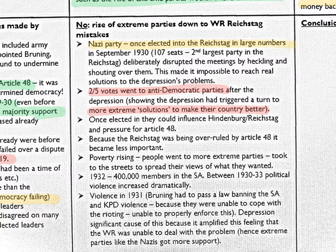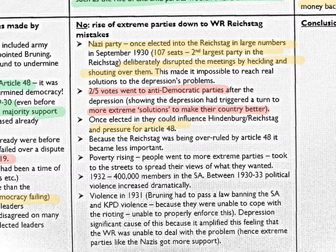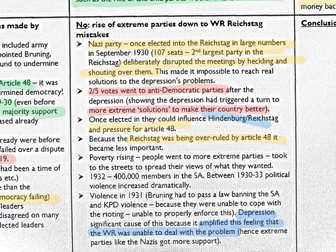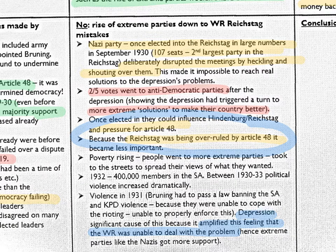The voting of extreme parties into power was not outside of Germany's control — it was a decision democratically made by Germans themselves. Once elected, 107 Nazi party members in 1930, the second largest party in the Reichstag, deliberately disrupted meetings by heckling and shouting, making it impossible to reach solutions to the depression's problems and pressuring for use of Article 48 again. Because the Reichstag was being overruled by Article 48, the Reichstag itself became less important. The depression was significant in amplifying existing feelings that the Weimar Republic was unable to deal with problems, hence the rise of extreme parties — but the nature of the constitution enabled extreme parties to gain more power than they otherwise would have, and that was the real cause of the coalition's collapse.